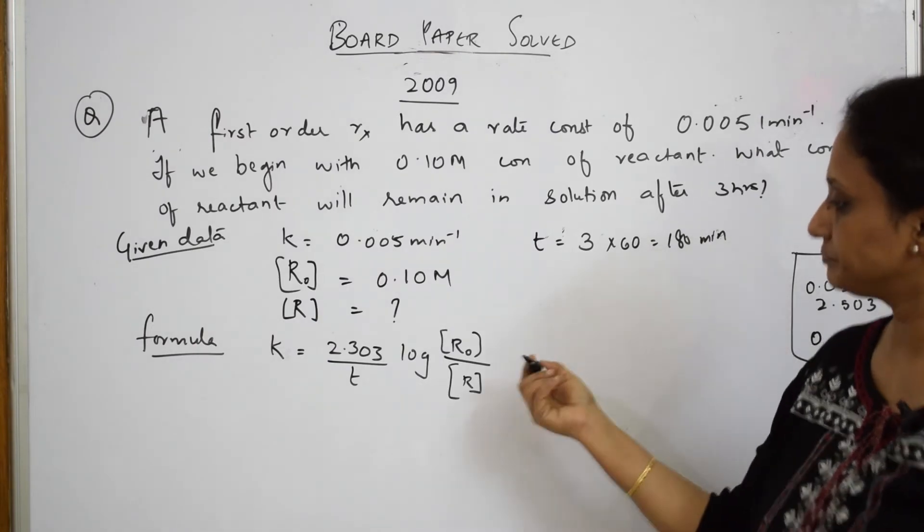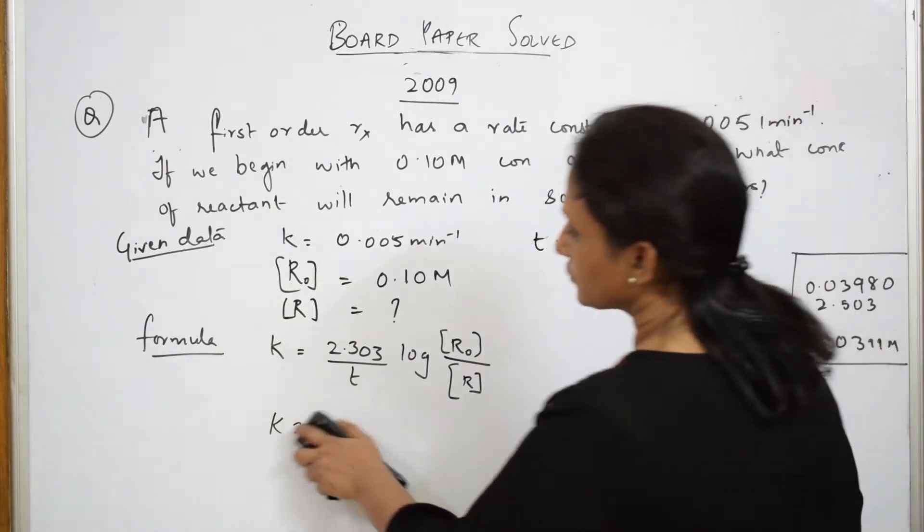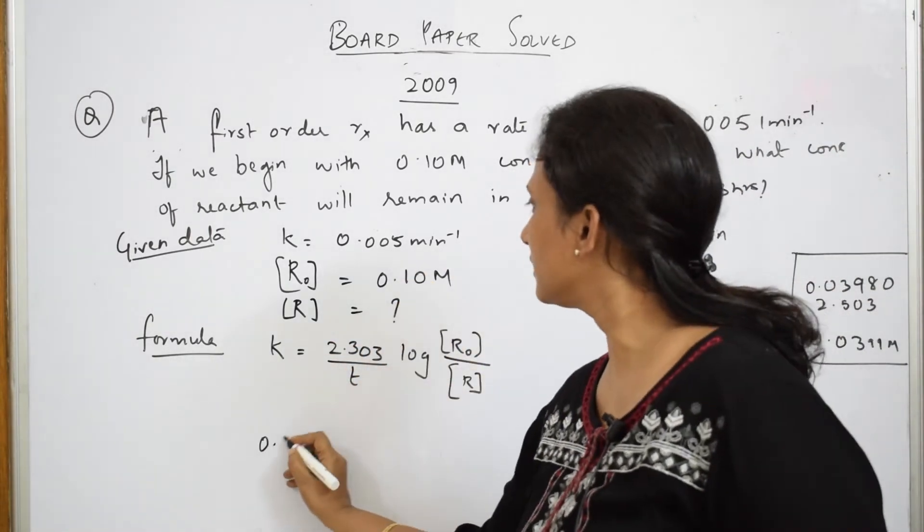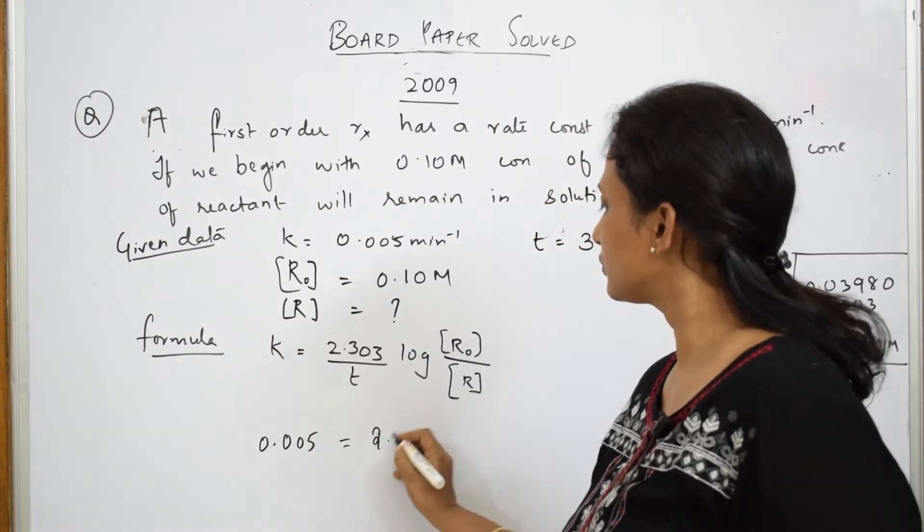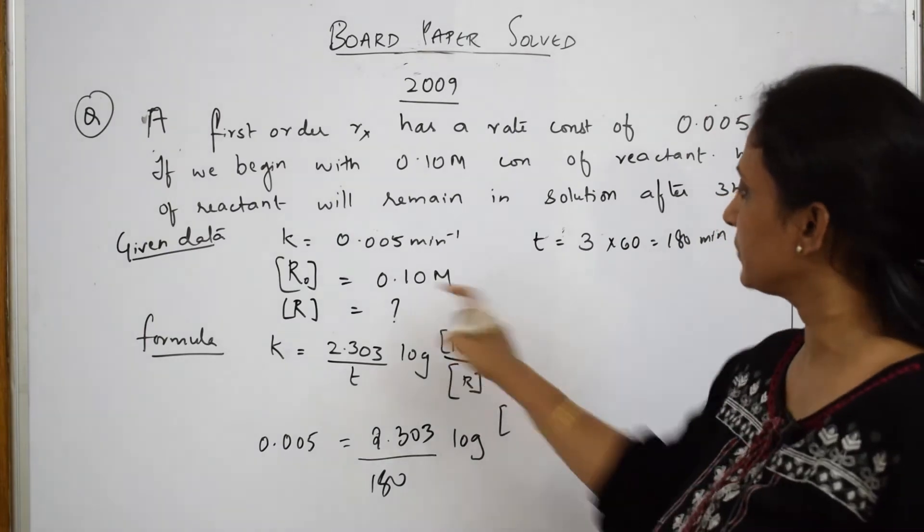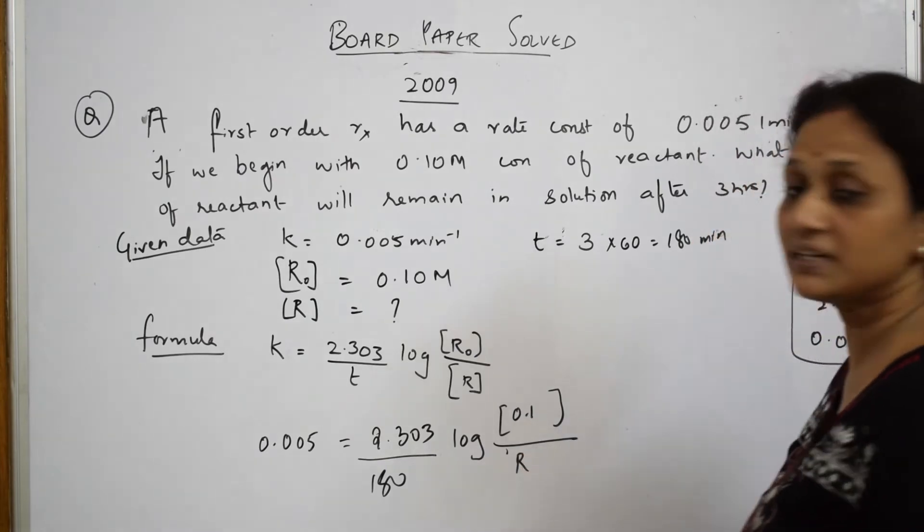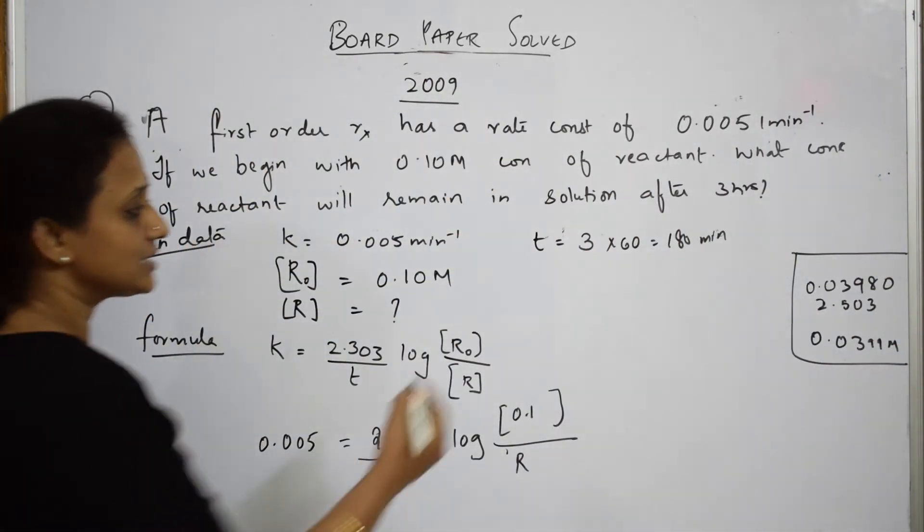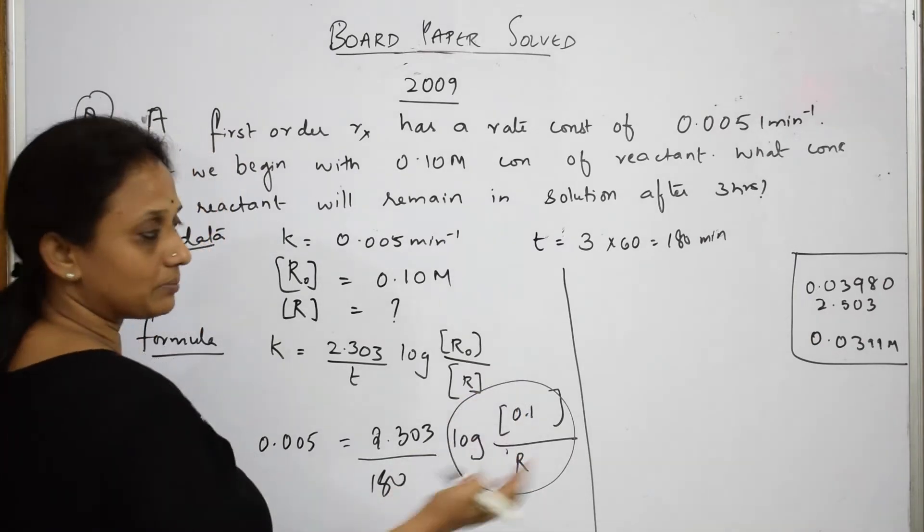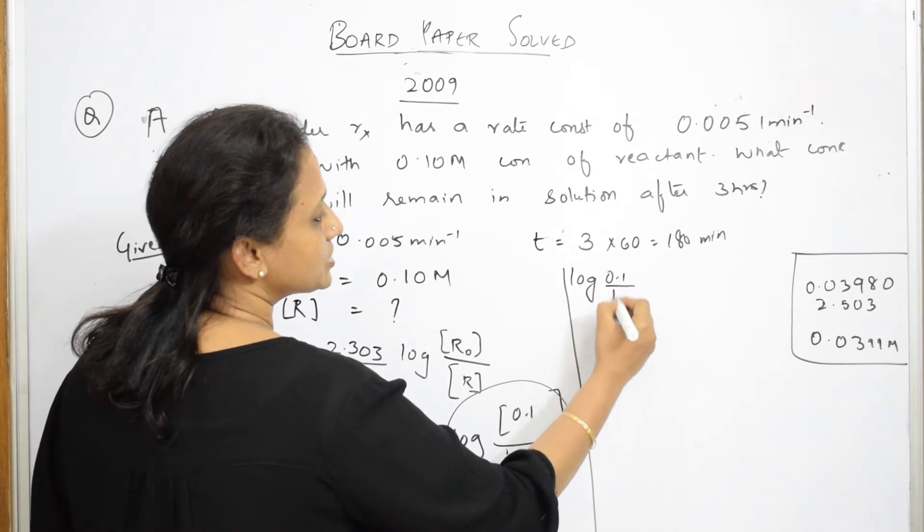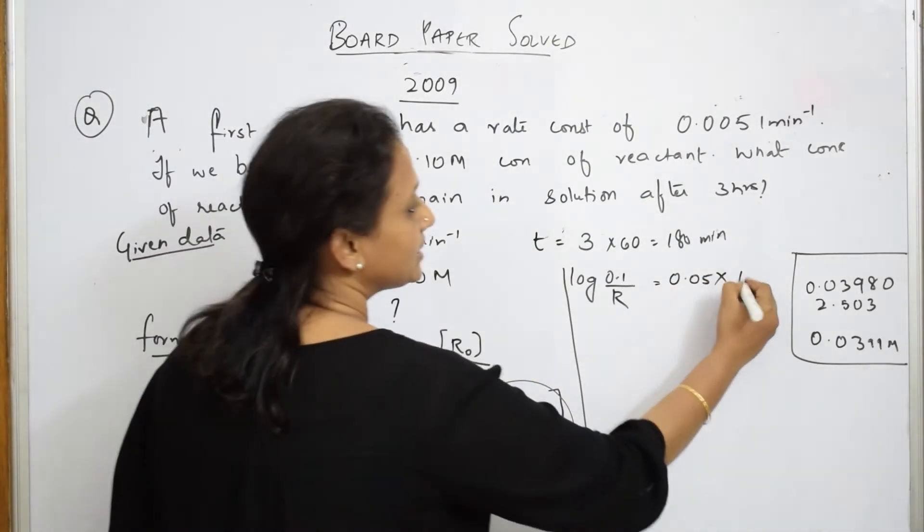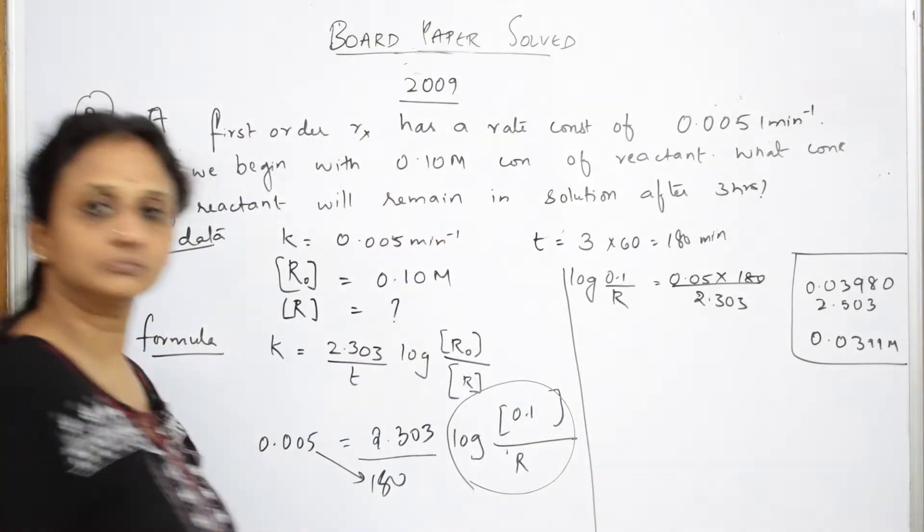Now start applying in this formula. You get K is equal to 2.303... K value is already given. I have to find out your R value. K, how much is K given? 0.05 minute inverse equals 2.303 by time given, which is 180 minutes, into log R naught. How much is R naught given? 0.1 molar divided by R. I have to find this R.